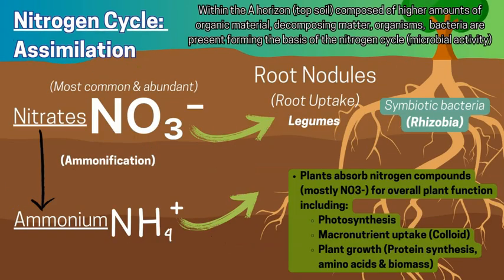An important part of the nitrogen cycle is assimilation — the term used for when the plant uptakes nitrogen compounds, mostly nitrates and some ammonium, and uses that nitrogen for various functions and processes within the plant, namely growth and health.